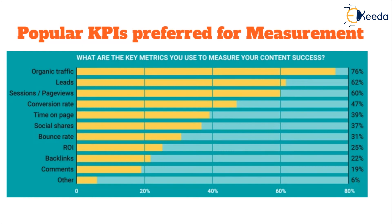Conversion rate, like leads, is a very business-focused KPI. Time spent on page and sessions or page views again reflect content quality. Social shares indicate both content quality and customer engagement and relevance. Bounce rate checks relevance and quality of content. ROI is a business-focused KPI — whatever you invested in content creation, what return are you getting — and this return need not be in terms of actual revenue; it could be in terms of customer acquisition or lead capture. Backlinks, comments, and other KPIs are also tracked but at a more limited level. The top KPIs are simple to track and are strong indicators that your content is on point, so you must start measuring them from the outset.